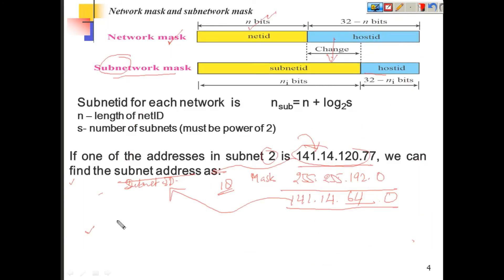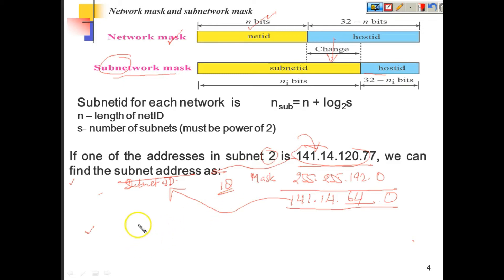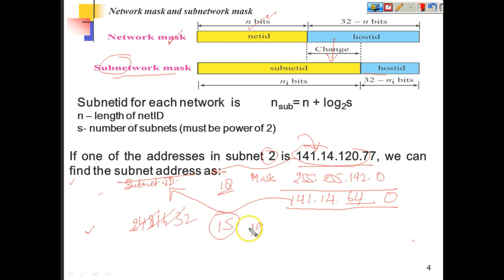It is very easy to find subnet information — you can find the first address, the last address, and the number of addresses in any subnet. You can also design your network by doing subnetting. One thing to remember: the number of addresses in a subnet must always be a power of 2. We cannot make any subnet that is not a power of 2 — the number of addresses must be 2, 4, 8, 16, 32, and so on. We cannot form a subnet of size 15 or 19; those are not valid.